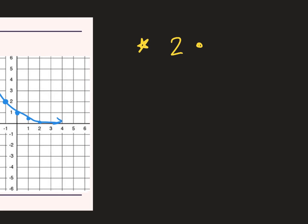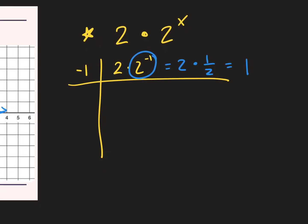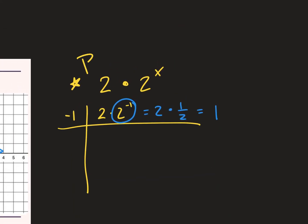One thing I wanted to point out with the homework: make sure you plug in 4 points just like we did for all the ones in the notes. You have to plug in 4 points for every question on the homework. If you don't plug in 4 points, you're not going to get full credit. Also, there are some on the homework where it's like 2 times 2 to the power of x. If I plug in negative 1, it will be 2 times 2 to the power of negative 1. You have to do the exponent first — 2 to the power of negative 1 is one half, so this is 2 times one half, which is 1. Remember, you have to follow order of operations — PEMDAS. Exponent comes before multiplication.